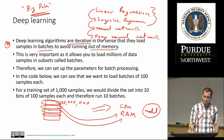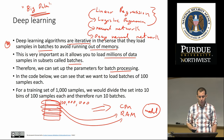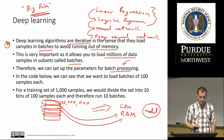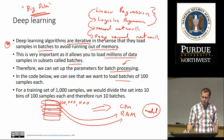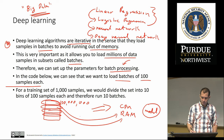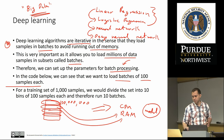This is one of the great advantages of deep learning — it allows you to load millions of data samples in subsets called batches. As part of the code, you will need to account for batch processing. For example, if you want to load batches of one hundred samples each for a training set of one thousand samples, you divide the set into ten bins of one hundred samples each, and therefore you run ten batches. This makes deep learning good for big data.